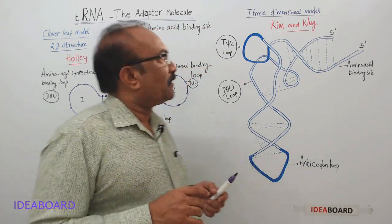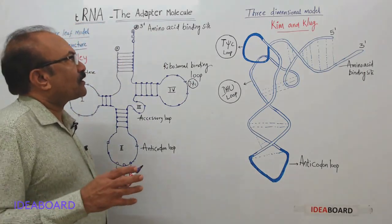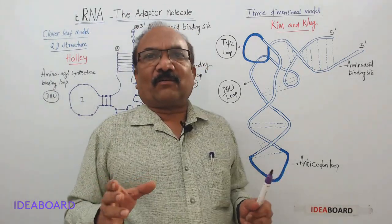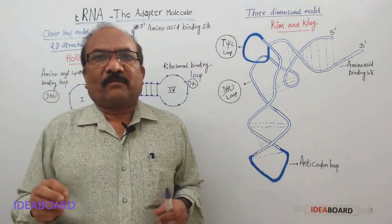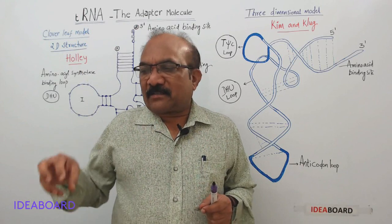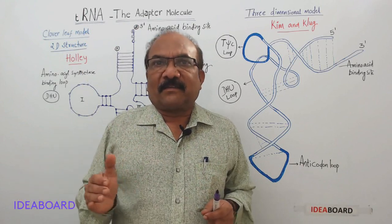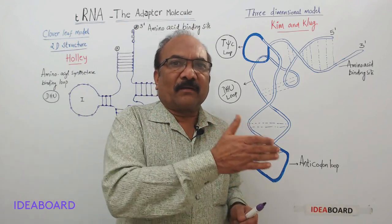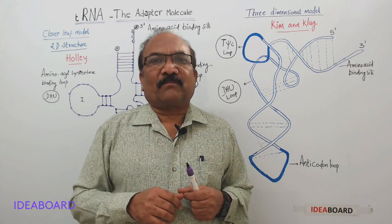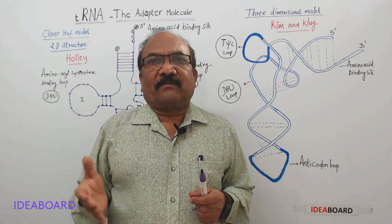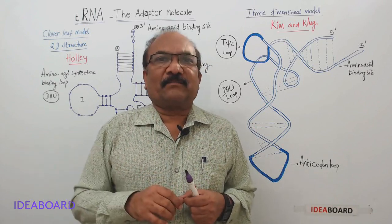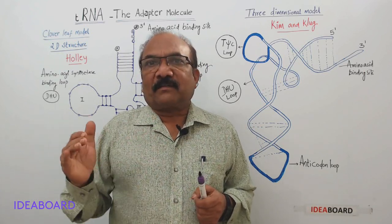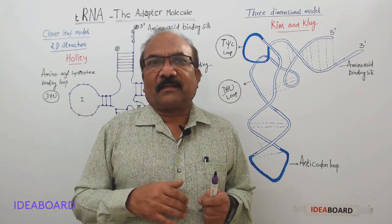Why is it called transfer RNA? Very simply, because it transfers amino acids from the place where they are synthesized to the place where translation is taking place. Why is it called translator RNA? Because the information is brought by messenger RNA in the form of coded language, as triplet codons, and these codons have to be decoded.